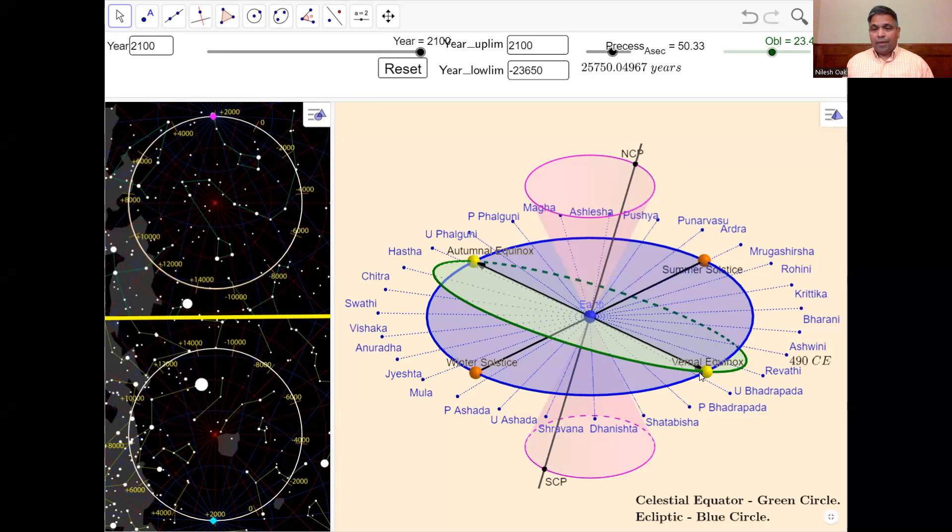Notice the positions of the equinoxes and solstices. This is the scenario as seen today in our times. The vernal equinox is near nakshatra Uttara Bhadrapada, summer solstice is near nakshatra Ardra, autumnal or fall equinox is near nakshatra Uttara Phalguni, and winter solstice is near nakshatra Mula.